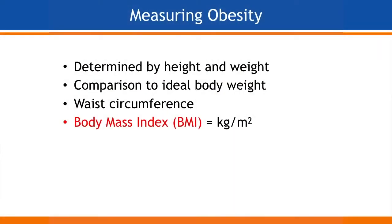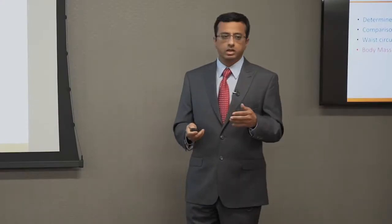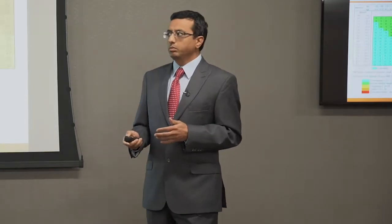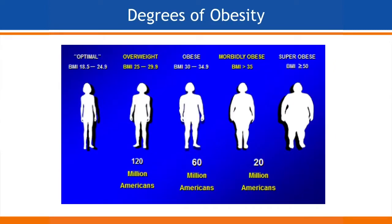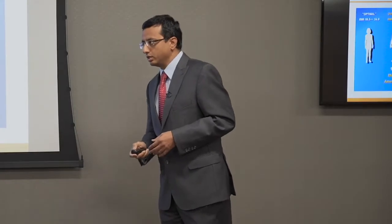How do we measure obesity? There are different scales, but in medical terms we use Body Mass Index — basically a weight-to-height ratio. Anything between 18 and 24 is normal weight; between 25 and 30 is overweight; anything above 30 is obesity. Even within obesity there are different grades: obese, morbidly obese, and super obese. As BMI increases, so do the related medical complications.